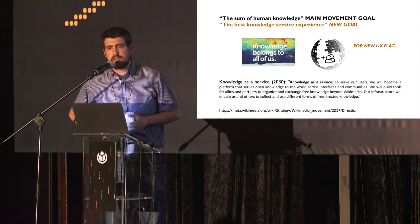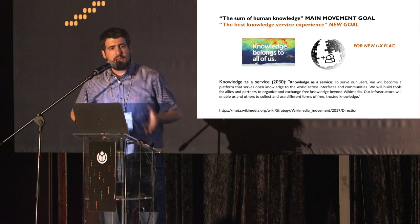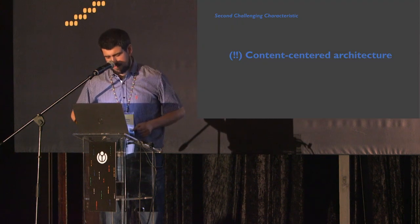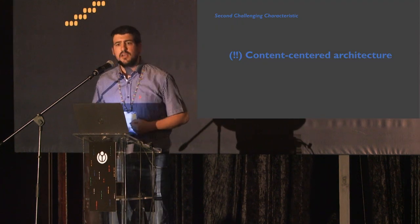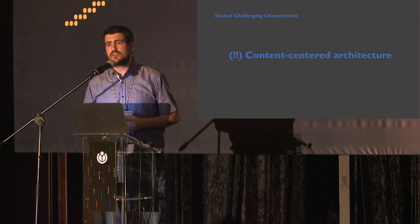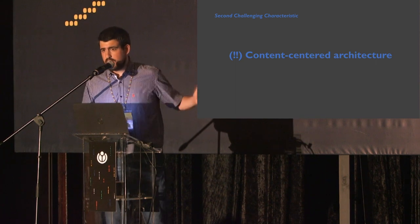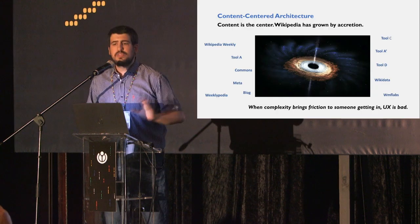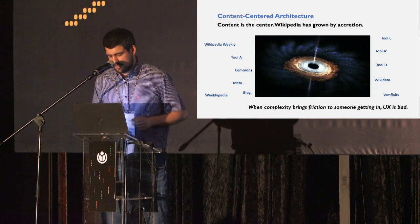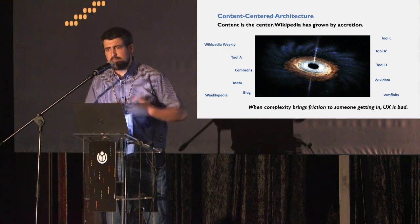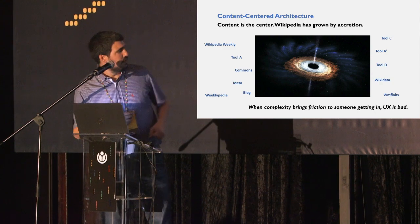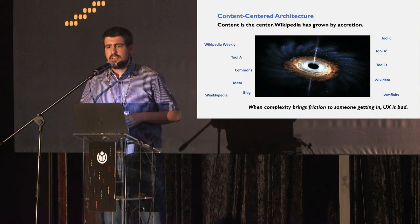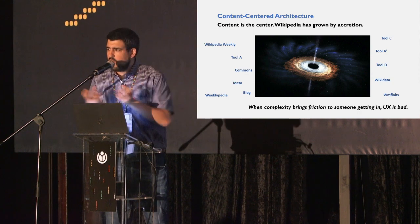This user experience flag would really help in bridging communities and the foundation. This brings me to the second challenging characteristic for improving user experience: the outcome of the product — the content-centered architecture. We know that content is the center of Wikipedia; this is why we create it. But this has consequences. Wikipedia has grown by accretion — there are tools, websites for pictures, websites for metadata. It's a universe, and it all revolves around content.